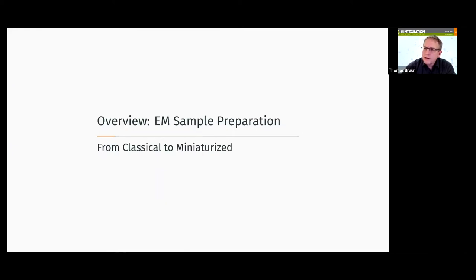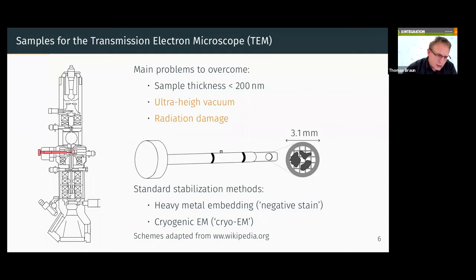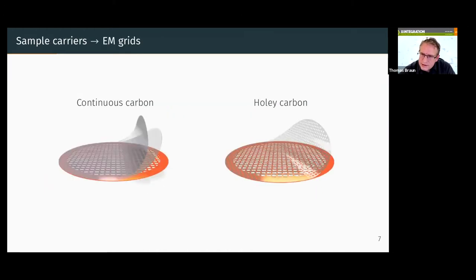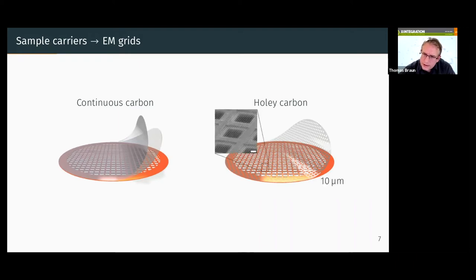For people not so familiar with electron microscopy: the electron microscopy is a very hostile environment for proteins — it's ultra-high vacuum and there is a lot of radiation which damages proteins. There are two main methods to stabilize the proteins: heavy metal embedding, so-called negative staining, and of course cryogenic electron microscopy, cryo-EM, which preserves the proteins from ultra-high vacuum and radiation damage. This is done on grids with either continuous carbon film or a holey carbon film, where 1 to 2 micrometer holes allow a thin water layer for cryo-EM.